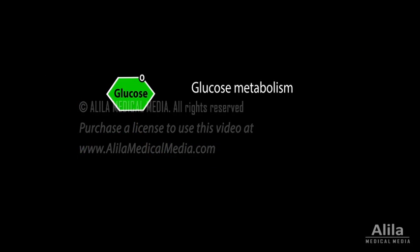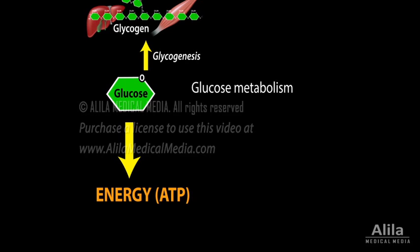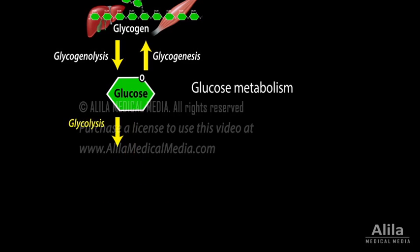Glucose is central to cellular energy production. Cells break down glucose when energy reserves are low. Glucose that is not immediately used is stored as glycogen in liver and muscles. Glycogen is converted back to glucose when glucose is in short supply. Energy production from glucose starts with glycolysis, which breaks glucose into two molecules of pyruvate, releasing a small amount of energy. Glycolysis involves multiple reactions and is tightly regulated by feedback mechanisms.